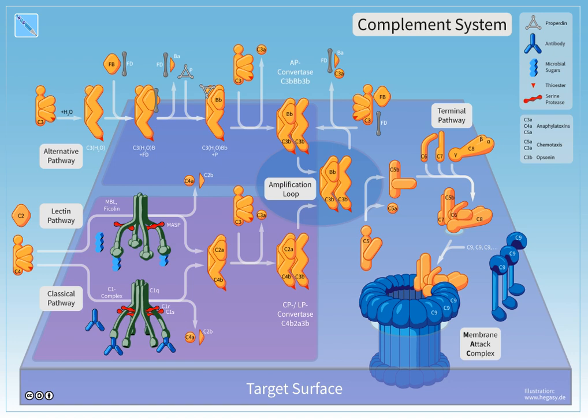The complement system is a part of the immune system that enhances the ability of antibodies and phagocytic cells to clear microbes and damaged cells from an organism, promotes inflammation, and attacks the pathogen's cell membrane.